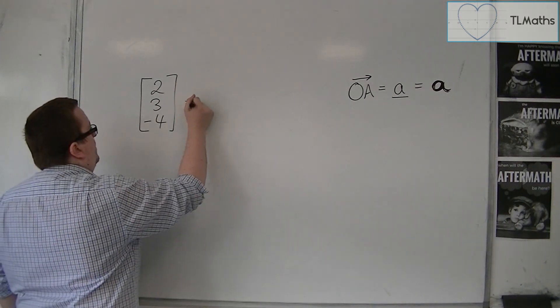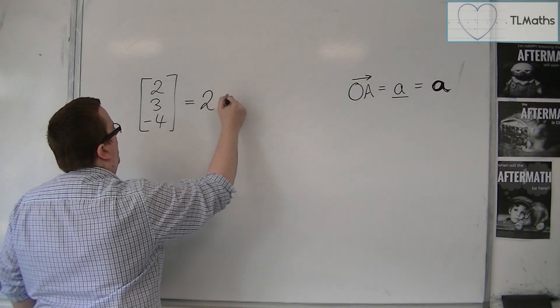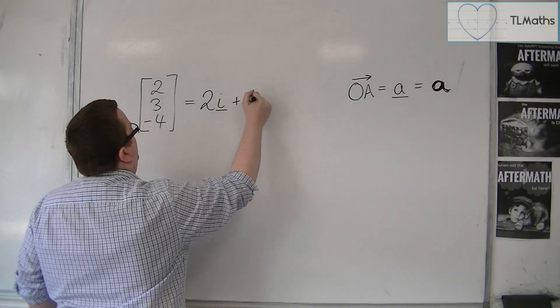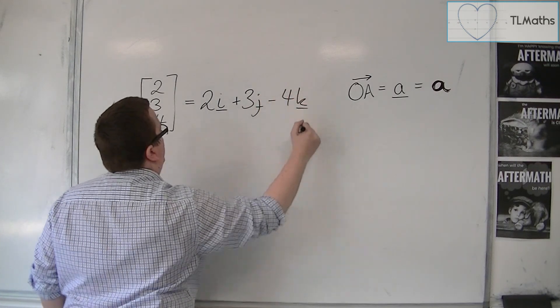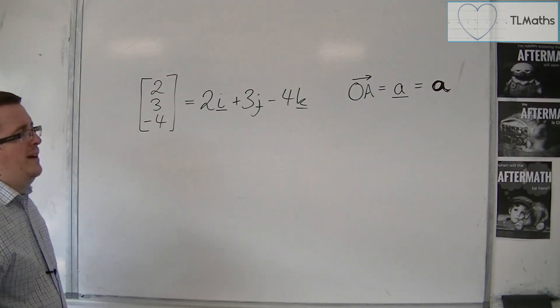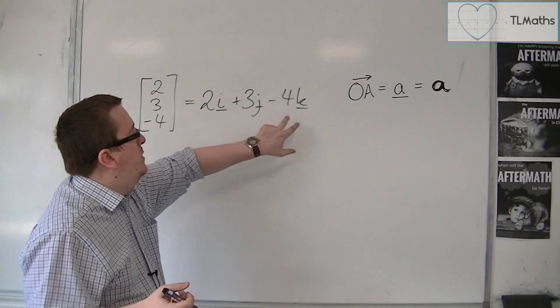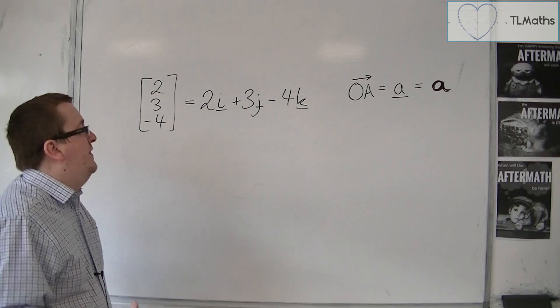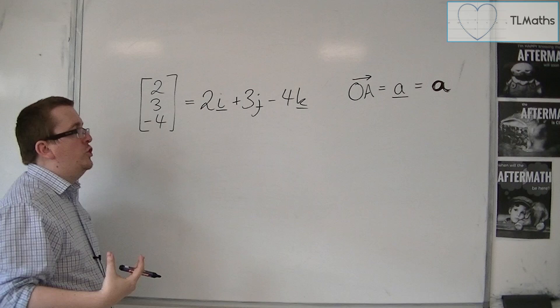A synonymous component form for this is writing it as 2i plus 3j minus 4k. It's kind of like 2x plus 3y minus 4z in the sense that this is going in the x direction, that's in the y direction, that's in the z direction.